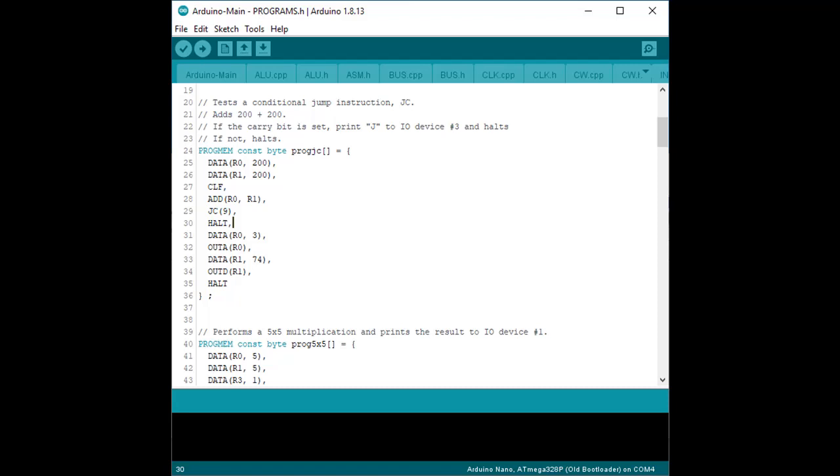Then we perform a jc instruction that will jump if the carry flag is set. If so, we print a capital J letter to IO device number three, the Arduino serial monitor, and halt the program. If the carry bit is not set, we halt the program immediately.